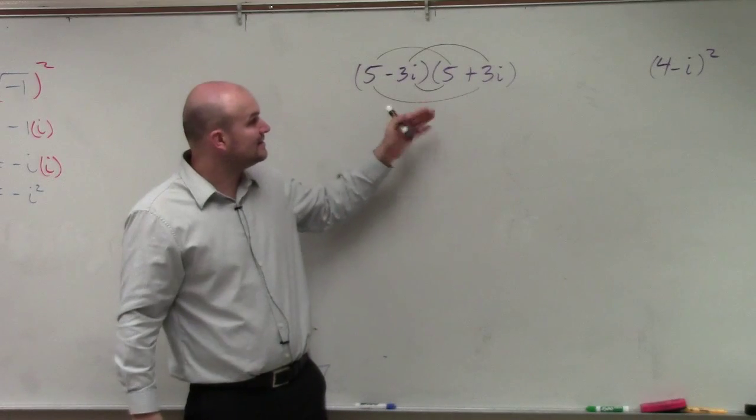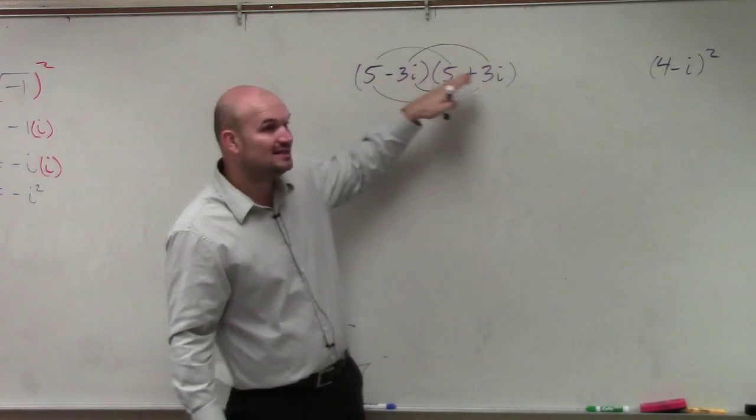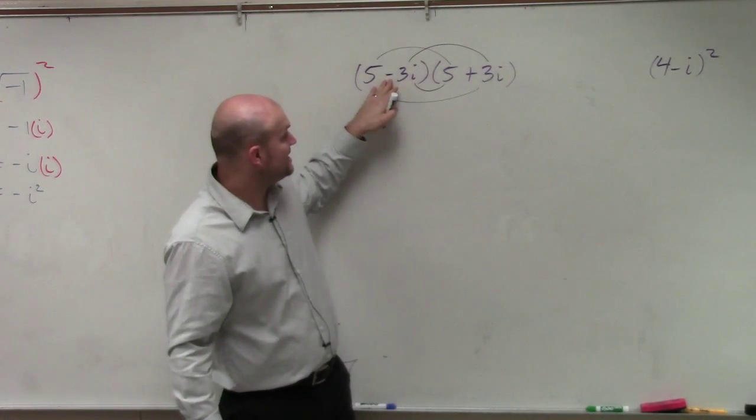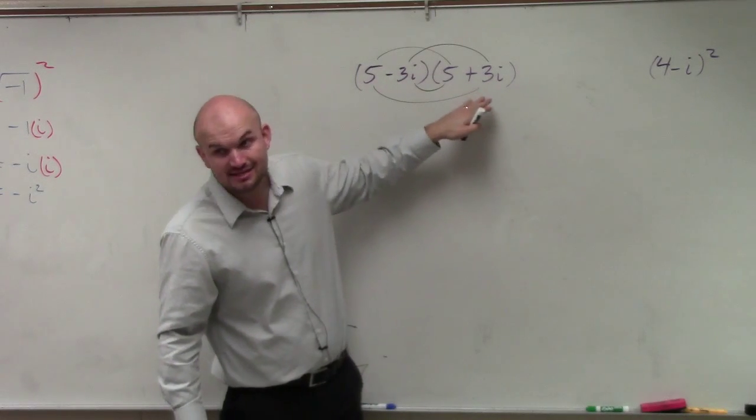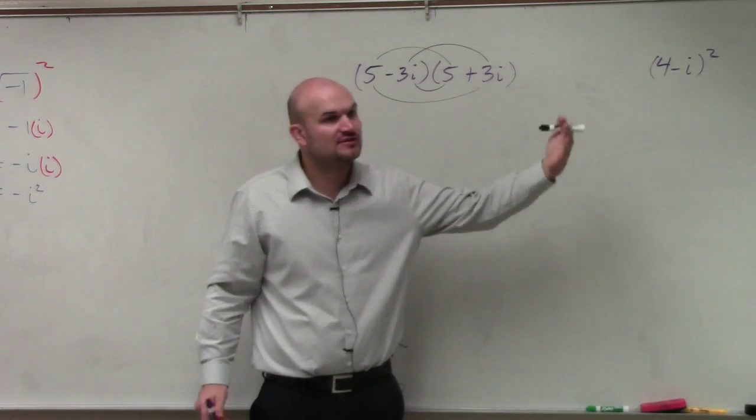We want to start looking at special products. And when you guys see a problem like this, when you see the product is exactly the same, but one's negative, one has the difference, and one has the sum, that produces a difference of two squares.